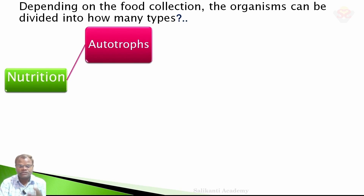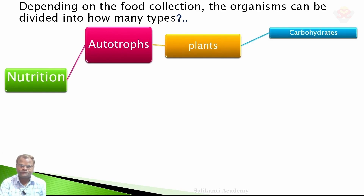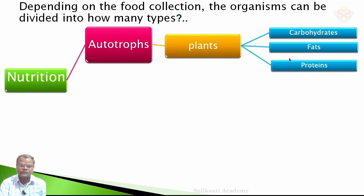The food that plants produce contains carbohydrates, fats, and proteins. These are the major nutrients present in the food produced by plants.